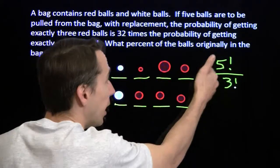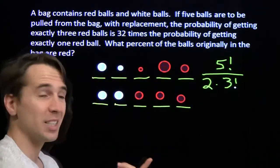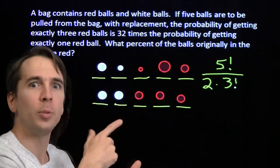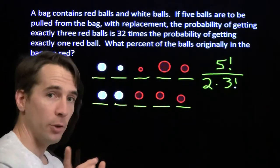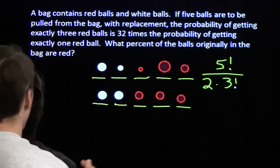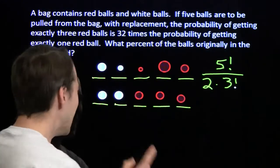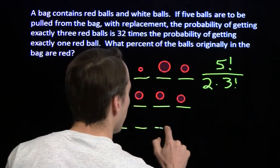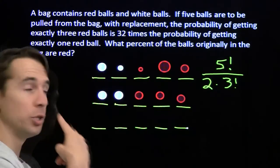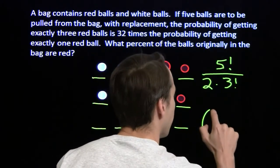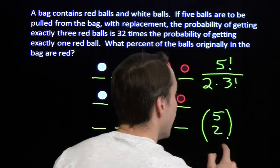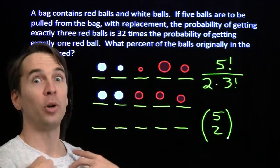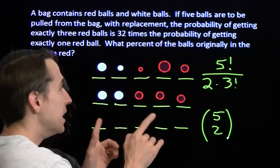Computing this: 5! is 120, divide by 2 gives 60, divide by 3! which is 6, gives 10 — exactly what we counted by listing. For those familiar with binomial coefficients and combinations, you might have thought of this even faster: we have 5 blanks and we choose 2 of them for the white balls, so there are '5 choose 2' ways. If you don't know what that is, ask your teacher — it's some cool stuff.